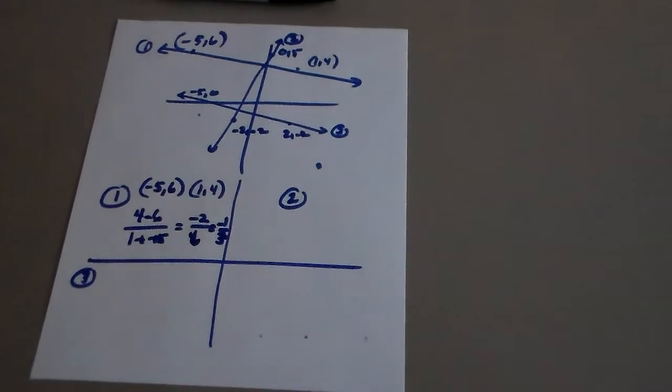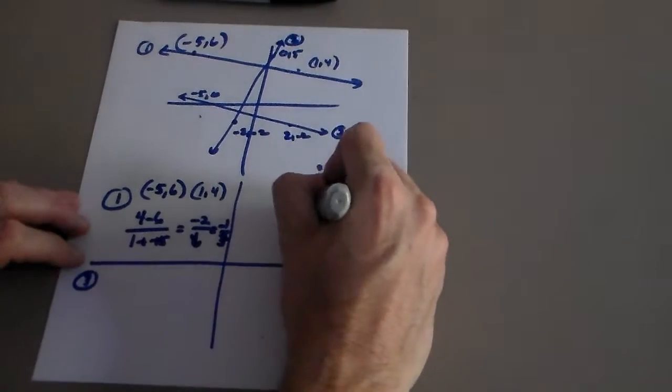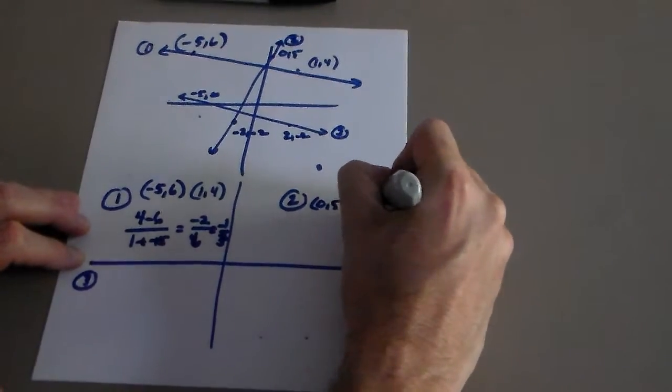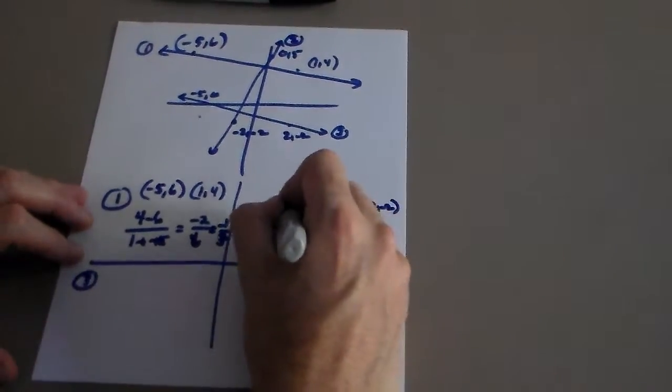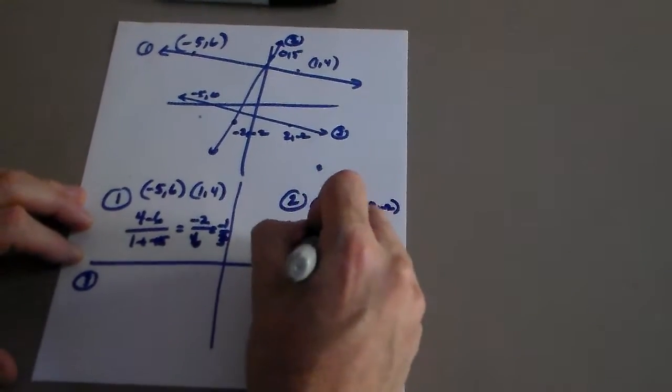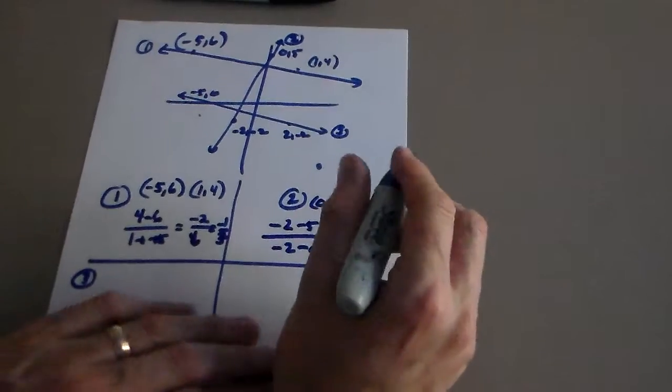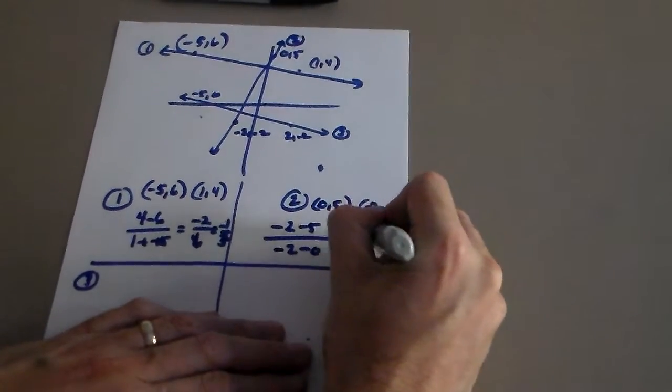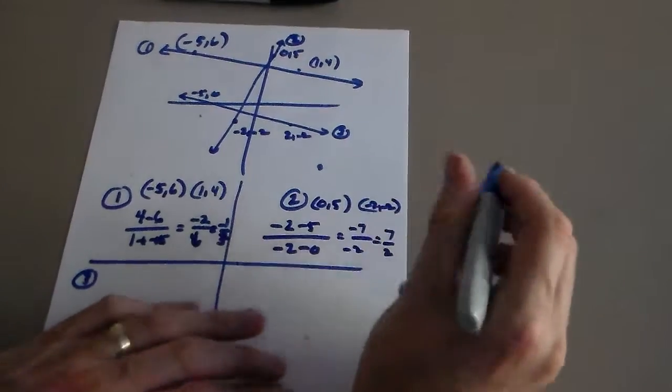Number two. Zero five, and then negative two, negative two. So if I do negative two minus five over negative two minus zero, it looks like I'm going to get negative seven over negative two, which is seven halves.